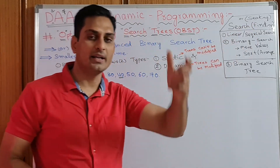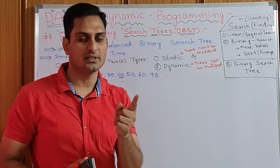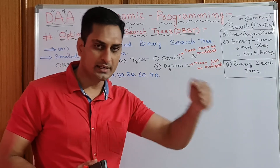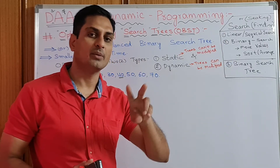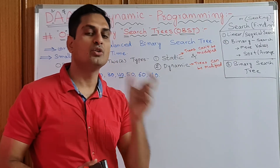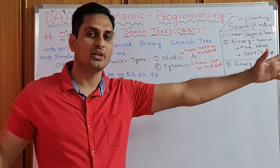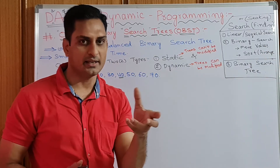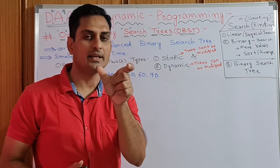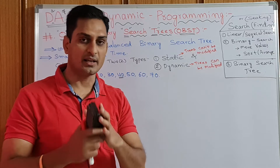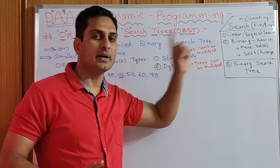Before this, we have a topic called searching — searching means finding or seeking an element. In that we have linear search, or sequential search, which means searching linearly one by one to find which element we need. Secondly, we have binary search. Before binary search, we do sorting. We choose binary search when the number of elements is very large.